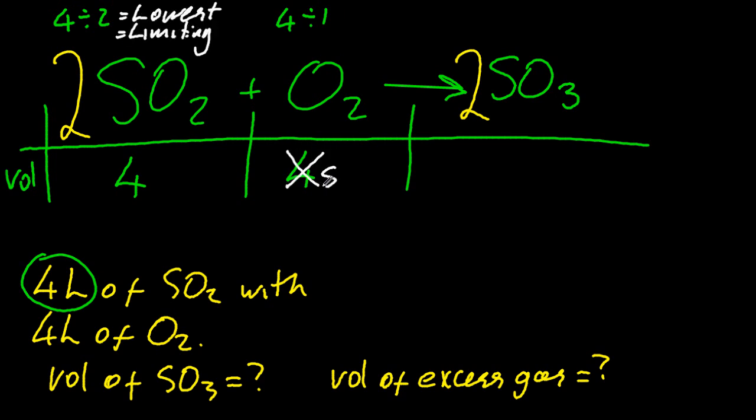I'll cross that out. So two is to four as two is to four. I'm using the ratio of the coefficients. So four litres of sulphur trioxide.